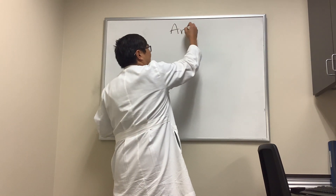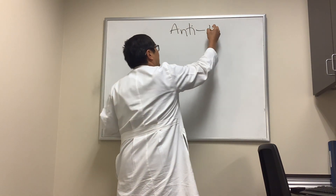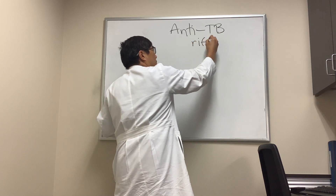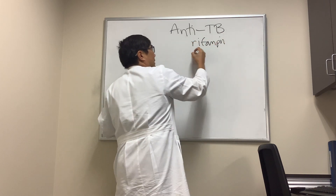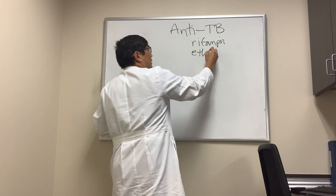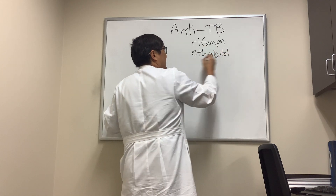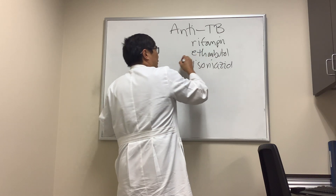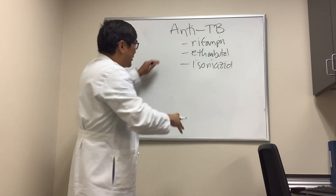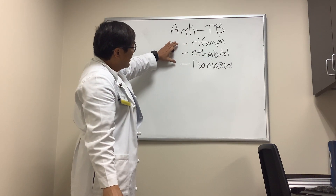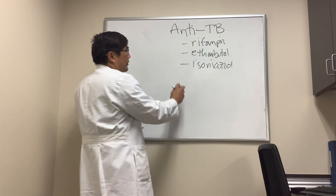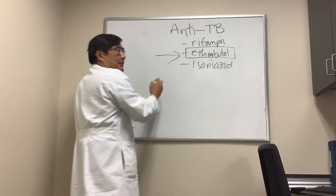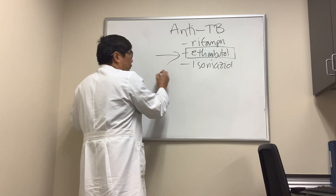Somebody wanted to know about anti-tuberculosis treatment, specifically triple drug therapy, which includes rifampin, ethambutol, and isoniazid. There is also four drug therapy and other drugs that can be used, but these are the main ones. The one that causes optic neuropathy is ethambutol.